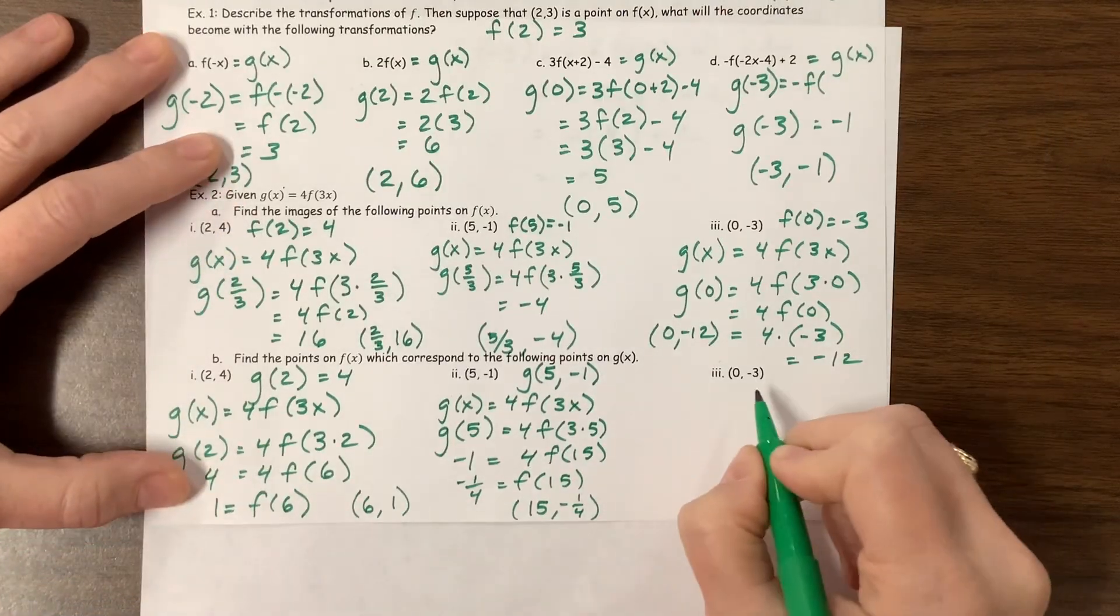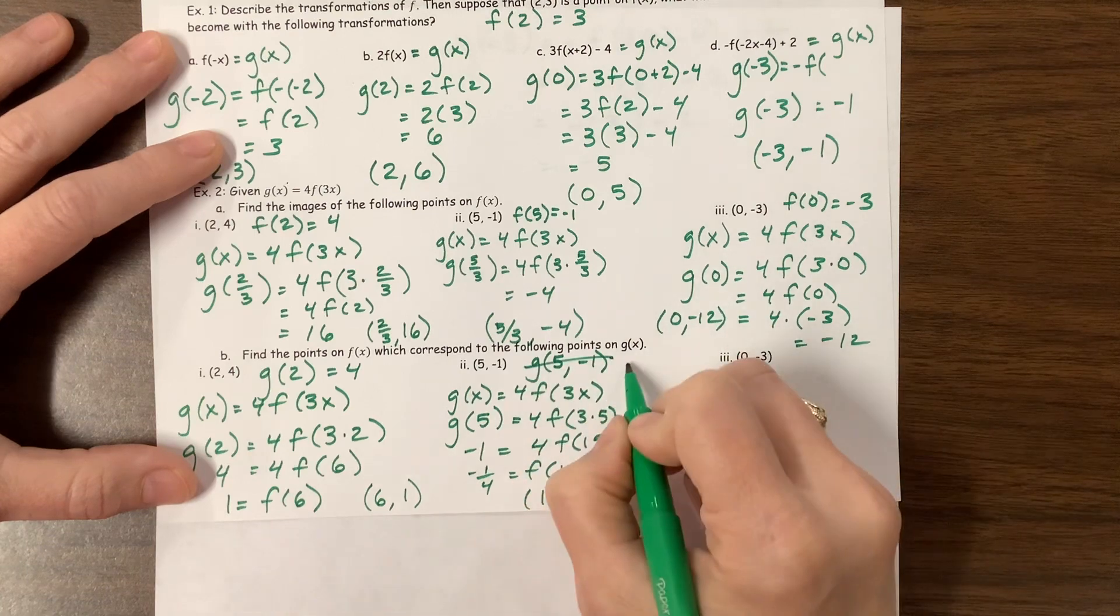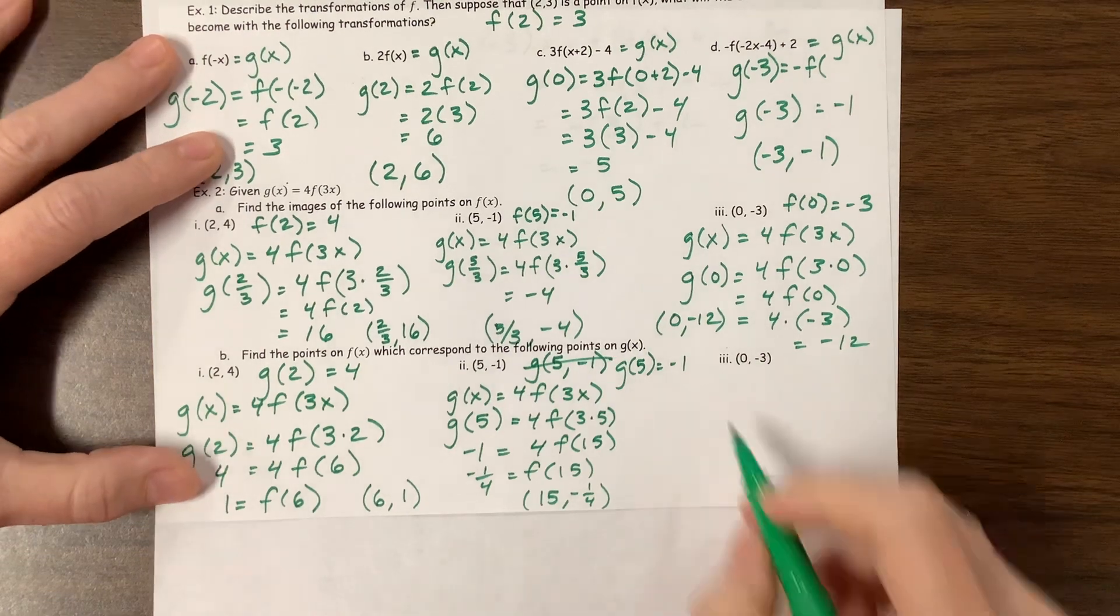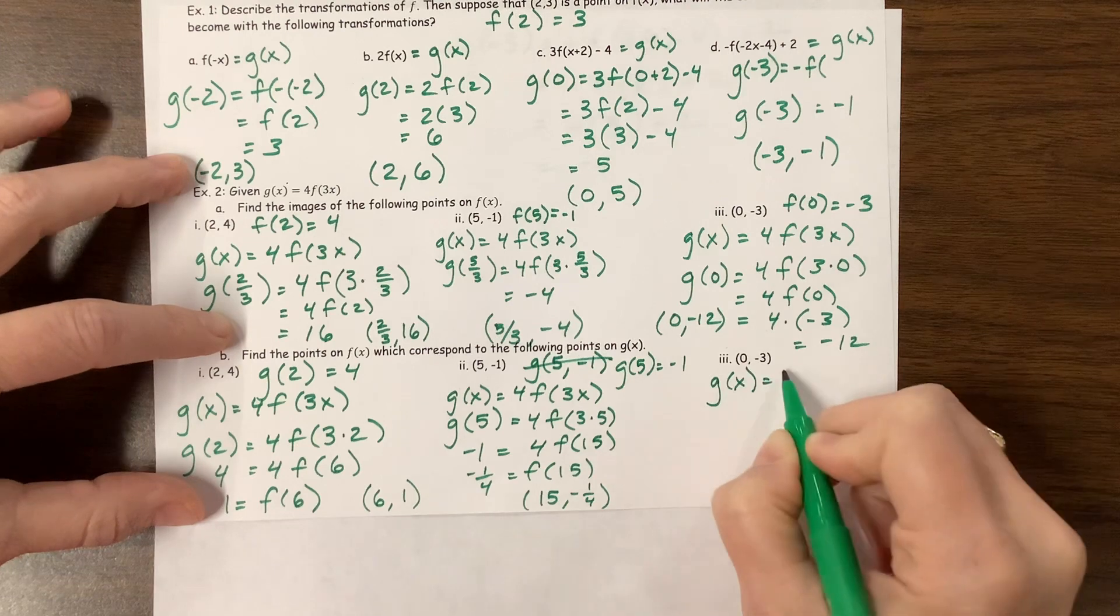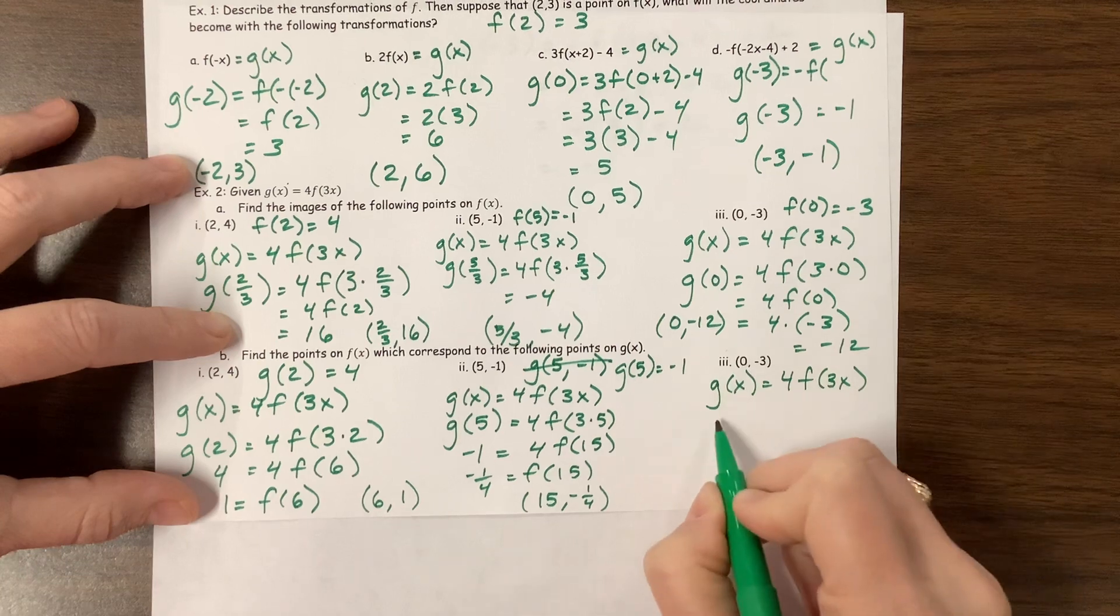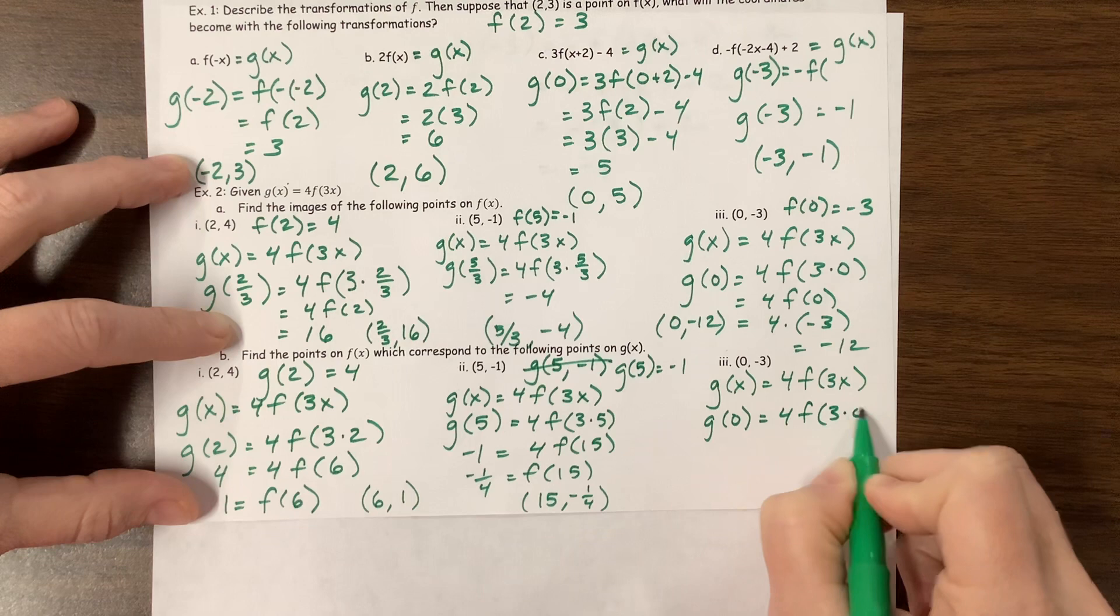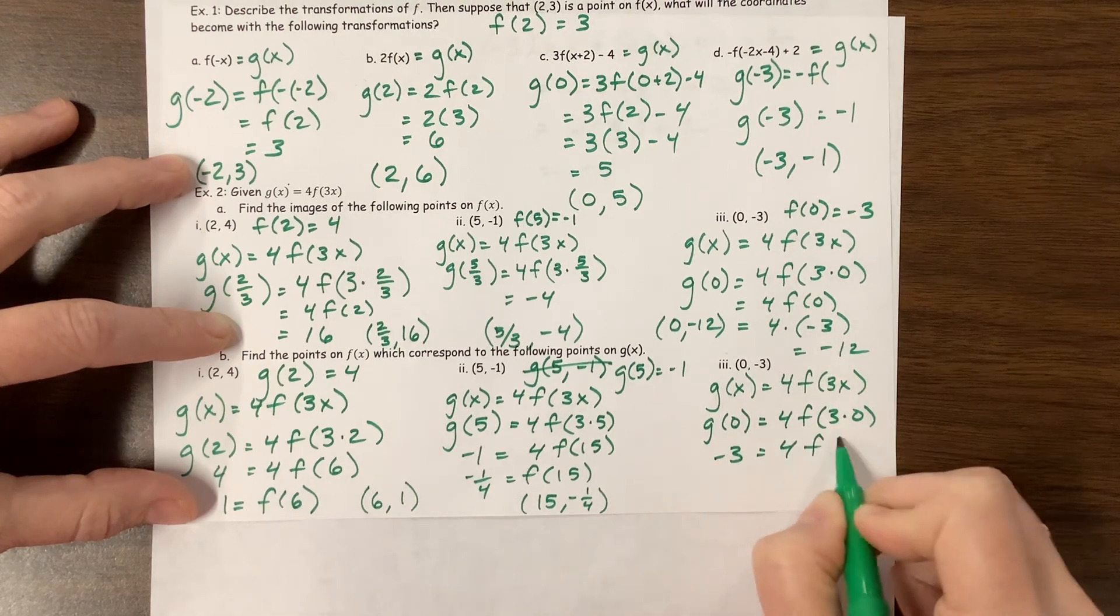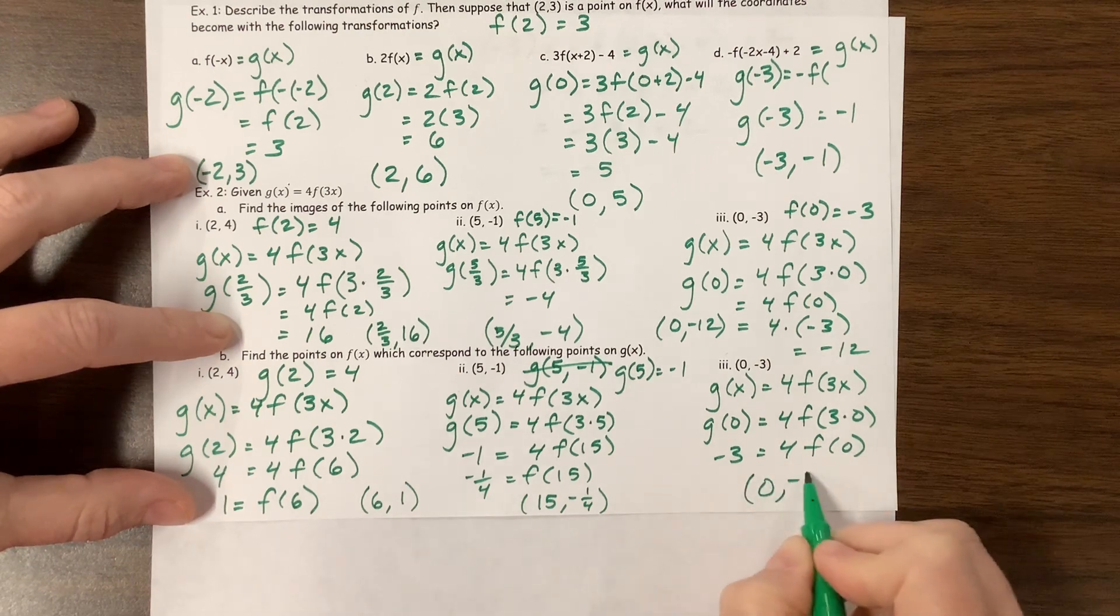Okay, and then the last one, this is, oh, my notation here, did y'all catch that? That's just totally wrong. g of 5 is equal to negative 1. I have somebody at the door and I'm ignoring them, so we'll see what happens. Okay, so g of x is equal to 4 times f of 3x. And this is g of, g of 0 is going to be equal to 4 times f of 3 times 0. g of 0 is equal to negative 3, is equal to 4 times f of 0. So divide, and I get the point 0 comma negative 3 fourths.